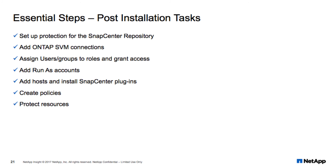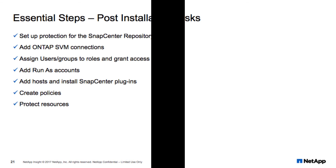We'll also need to add RunAs accounts, which are the credentials necessary for access to those application and database hosts. Then it's time to add the application database hosts, which will install the SnapCenter plugins themselves. All that is left before we can begin setting up protection is to create the necessary policies that will govern the levels of protection. This includes items such as retention, replication, and schedules. Now we can begin to protect the automatically discovered resources.